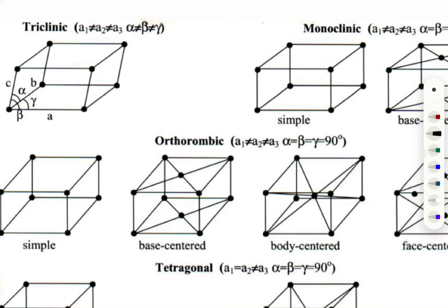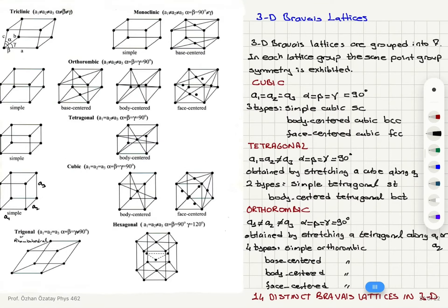So in triclinic, alpha, beta, gamma are not equal, a1, a2, a3 are not equal, and it is obtained by distorting a monoclinic structure. There is only simple triclinic.